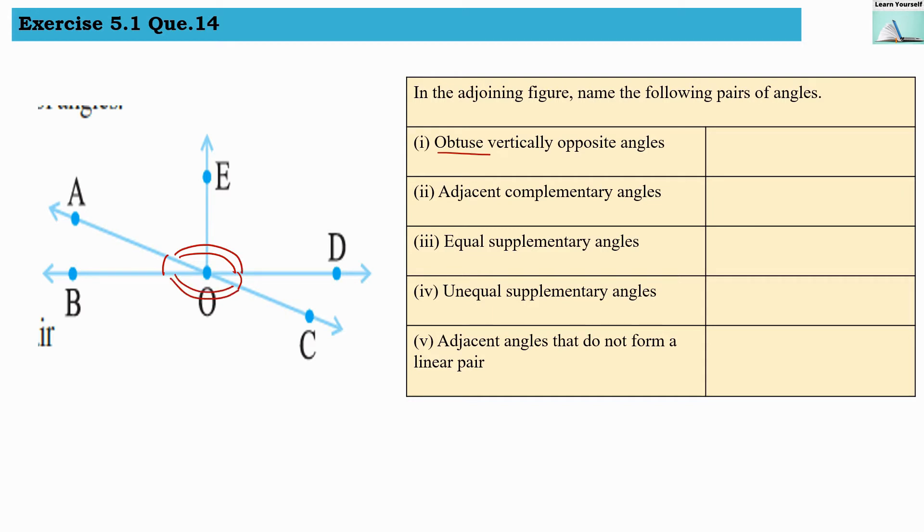Now they have asked us for the obtuse angle. This pair of angles will be acute vertically opposite angles. We have to find out obtuse which are greater than 90 degrees. So these are obtuse pair of vertically opposite angles.